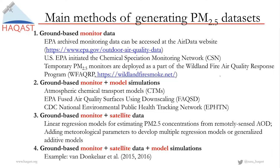After that, we have a combination of monitor and other sources of data, such as monitor plus model simulation. The Atmospheric Chemical Transport Model, CTMs, can be combined with the monitor. The Fused Air Quality Surface using downscaling, the FH2SD data, provides more spatial coverage using model simulation. There is also the CDC National Public Health Tracking Network called the EPHTN. All of these — FH2SD and EPHTN — are publicly available datasets.